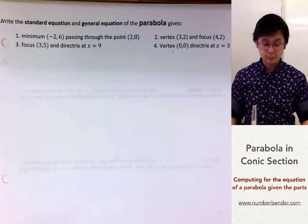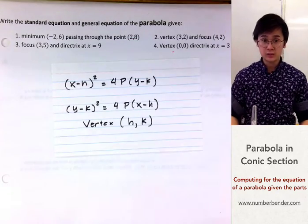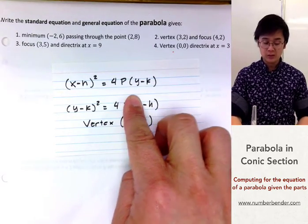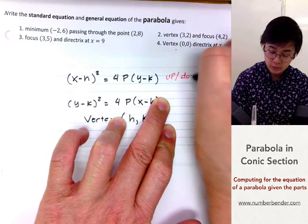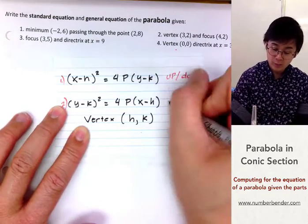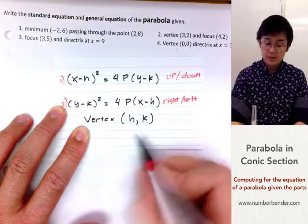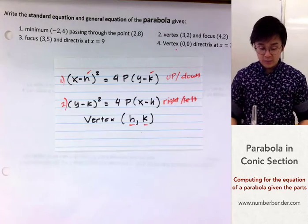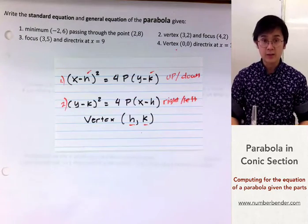Today we're going to be answering problems involving parabolas in conic sections. There are two formulas we need to use: the first is for a parabola opening upwards or downwards, and the second is for a parabola opening to the right or to the left. H and K in our parabola will be the values of our vertex. These are the basic concepts needed to answer problems 1 through 4.